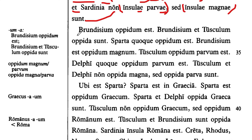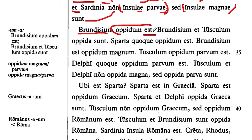We start our next paragraph with Brundisium, which is an ancient town in ancient Rome — now I believe called Bari in Italy. Brundisium oppidum est — Brundisium is a town, or a small city.